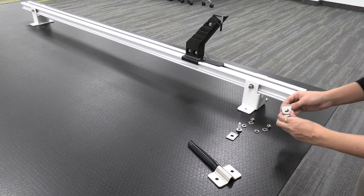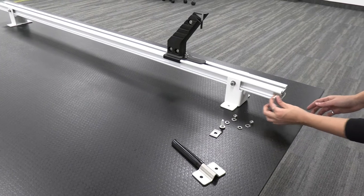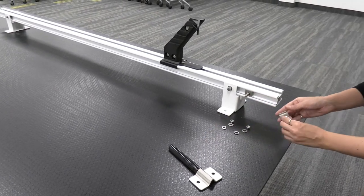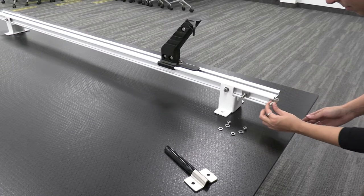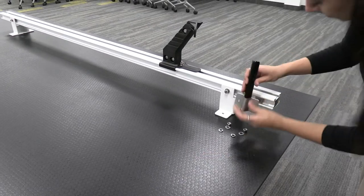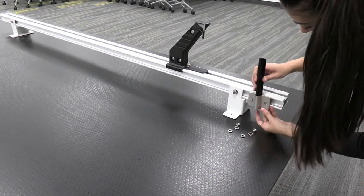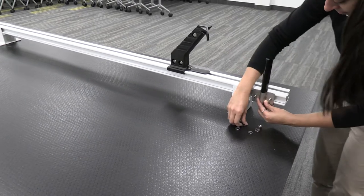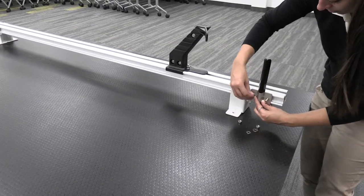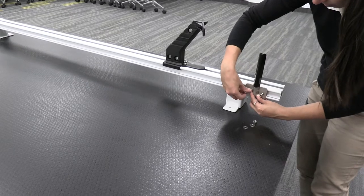Next, attach the rung stopper to the front crossbar. Place the carriage bolts into the insert plates and slide them onto the crossbar. Then attach the rung stopper with your flat washer, lock washer, and hex nut. It should be on the inside of the crossbar.